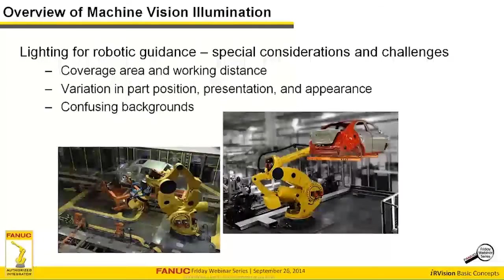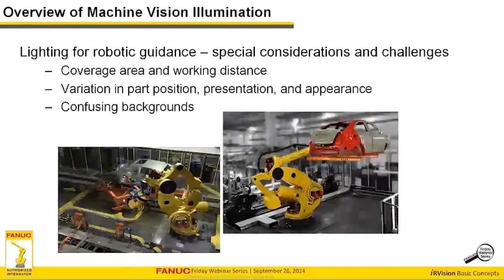The first consideration is coverage area and working distance. We have large robots to work with, and most robotic applications require a fairly large field of view, with the camera and lighting units out of the robot's way at extreme working distances. We can mount the camera on the end of the arm, giving a closer field of view, but then we're extremely limited in the kind of lighting we can carry with the camera.